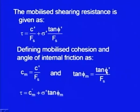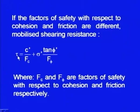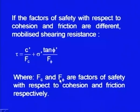On phi, you can use a smaller factor of safety because phi value can be determined more confidently. If different values of factor of safety are used for cohesion and friction, then tau equals C dash divided by F c plus sigma dash tan phi dash divided by F phi. So C m equals C dash upon F c and tan phi m equals tan phi dash upon F phi, where F c and F phi are the factors of safety with respect to cohesion and friction respectively.